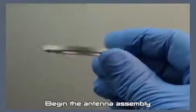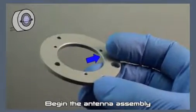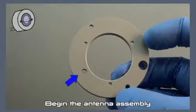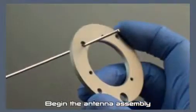Find the beveled edge of the antenna mount plate and face it up. Find the non-threaded hole that fits a number two insulator and thread the antenna through it.